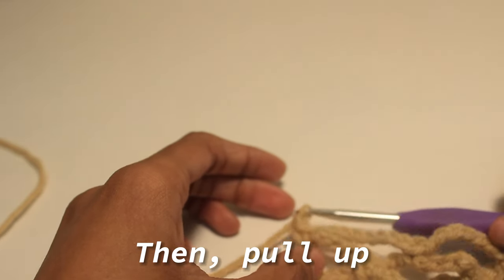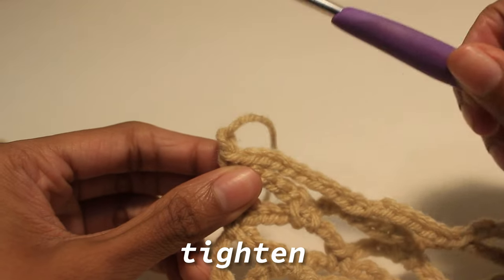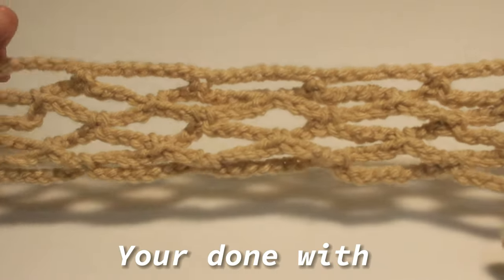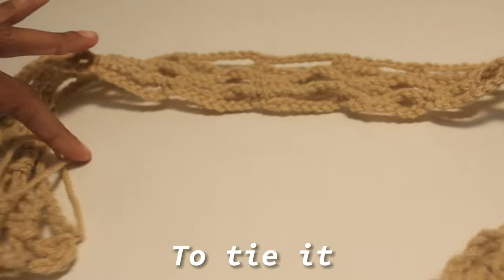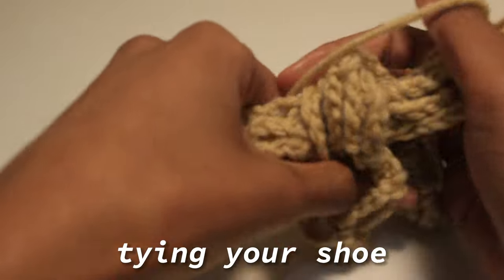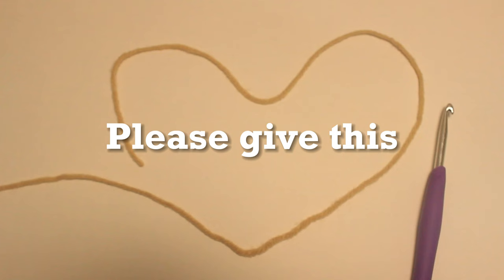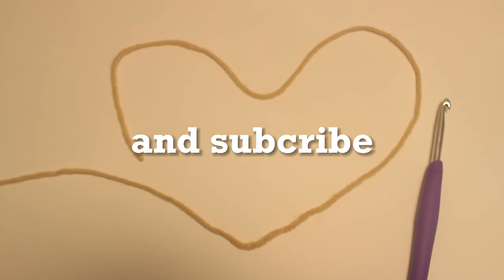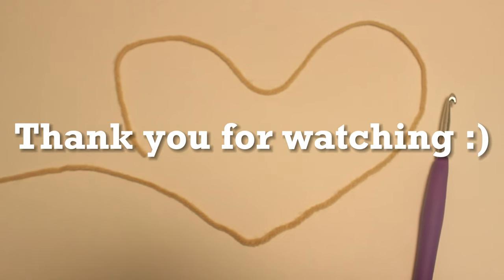Then pull up your hook and tighten. Good job, you're done with your headband. To tie it, grab both of the ends and make a knot, almost like a tiny shoe. Please give this video a like and subscribe if you love your headband. Thank you for watching.